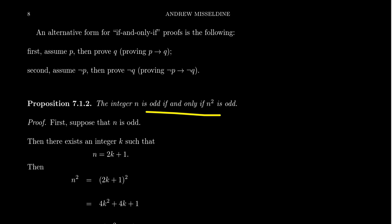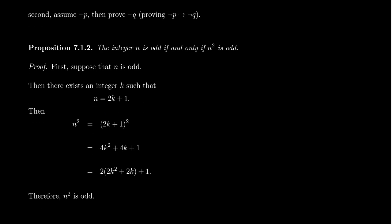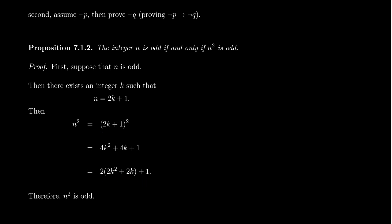I'm going to use that technique on: the integer n is odd if and only if n squared is odd. For sufficiency, n being odd implies n squared is odd. Suppose n is odd — there exists some integer K such that n equals 2K plus 1. Then n squared equals (2K+1)² equals 4K² plus 4K plus 1, which factors as 2·(2K² + 2K) plus 1. Since 2K² + 2K is an integer, n squared equals 2·(integer) + 1, which is odd. This gives us sufficiency.